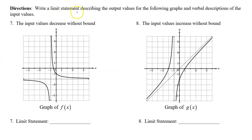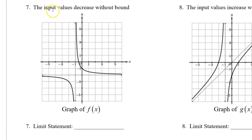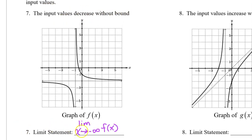For the next two problems, we will write a limit statement describing the output values of the following graphs and verbal descriptions of the input values. Number 7 says the input values decrease without bound — that means left end behavior. On the left side, we see that the function is approaching the horizontal asymptote y equals negative 2. So we finish this off by saying: the limit as x approaches negative infinity of f of x equals negative 2.